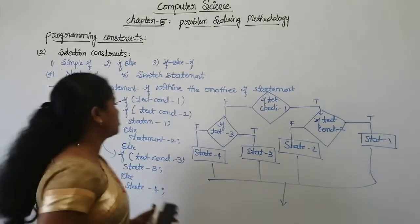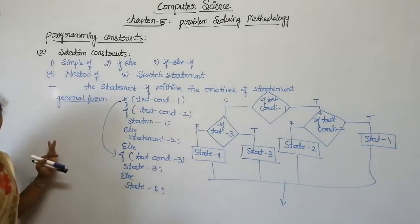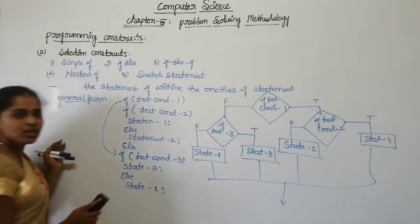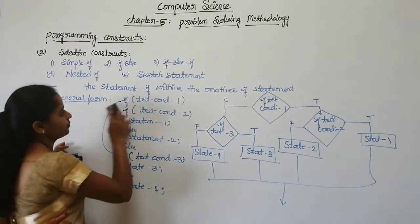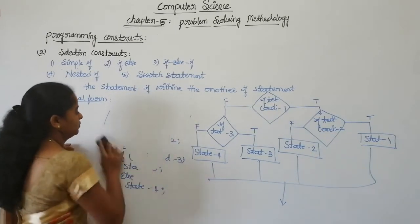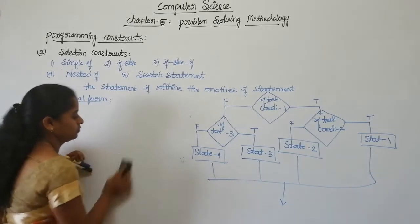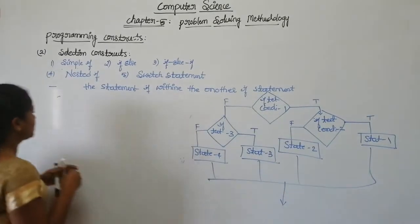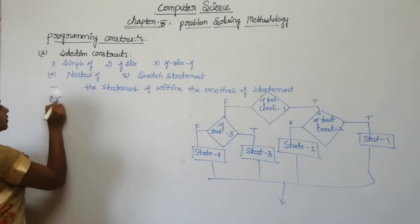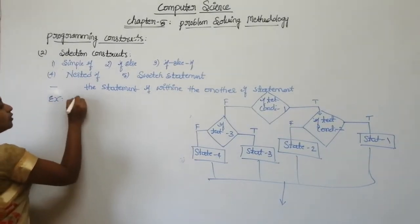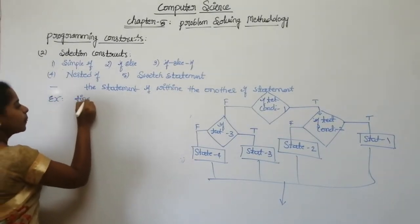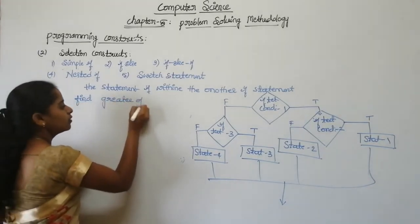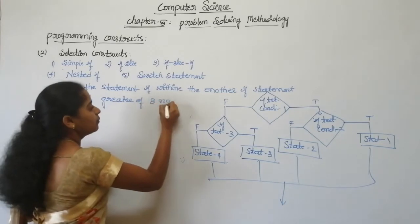Now let me discuss one example. Please note this down. The example for nested if is to find the greatest of three numbers.